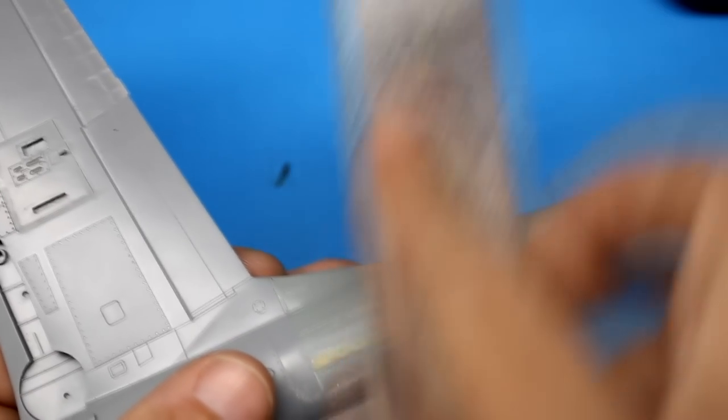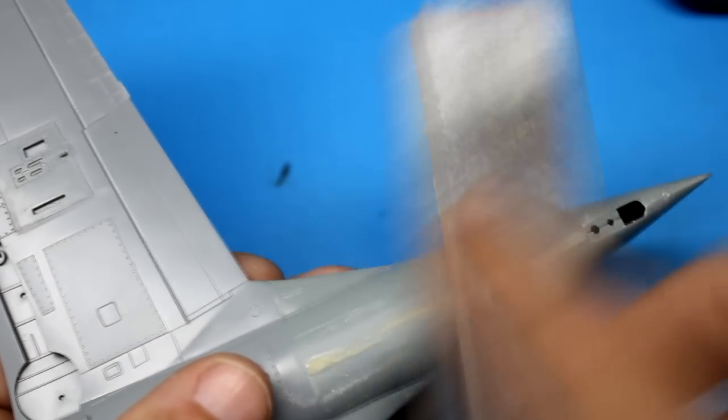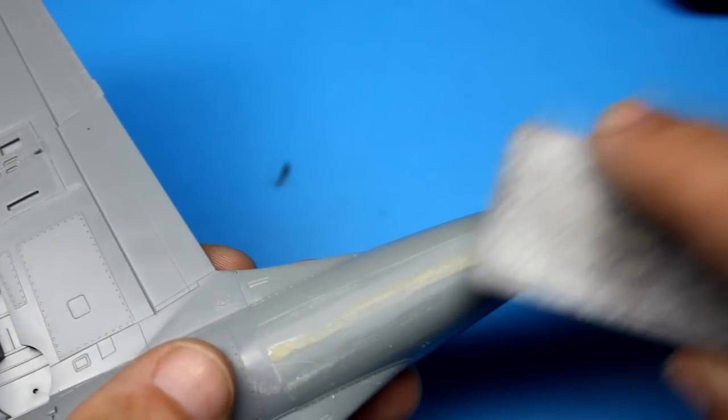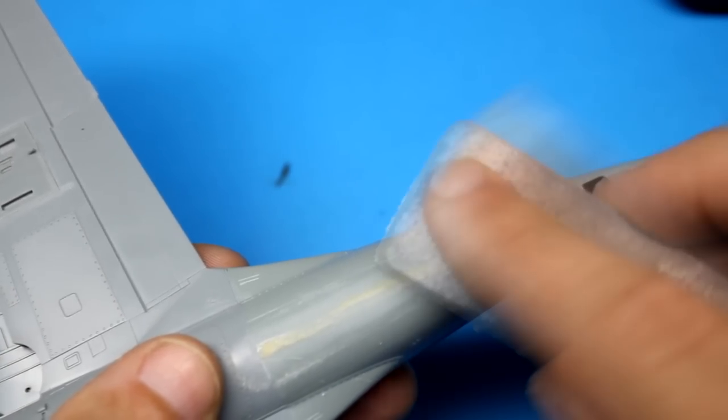And I'll start with usually a 400-grit sanding block and work my way all the way up to 4,000. I don't skip any of the stages as this gives me a nice smoother finish and cuts down on the scratches you have to clean up.